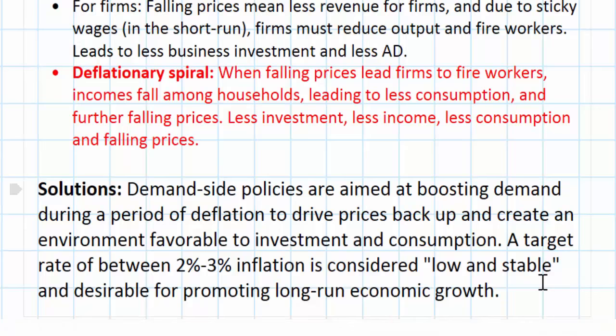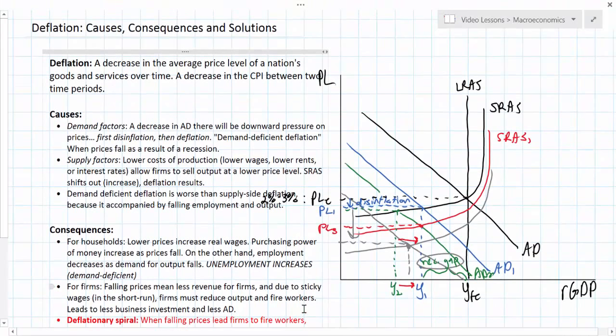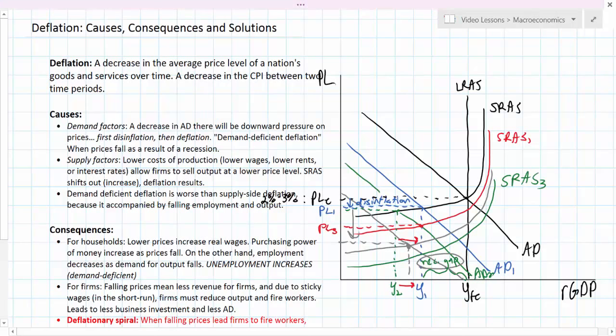When we talked about inflation, we talked about how supply-side policies can also be used. However, in the case of deflation, supply-side policies might actually exacerbate the problem. Whereas lower costs or more productivity or greater potential output for firms could help an economy get back to full employment, it will further decrease the average price level and exacerbate any deflationary pressures that already exist in the economy.